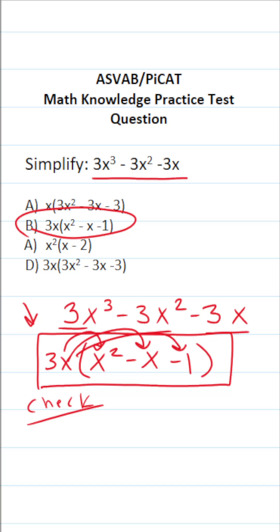What is 3x times x squared? That's going to be 3x to the third. What is 3x times negative x? That's negative 3x squared. And what is 3x times negative 1? That's negative 3x.